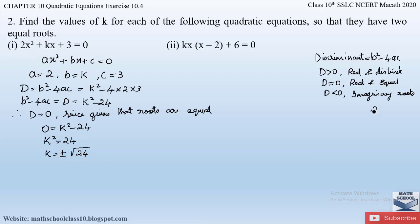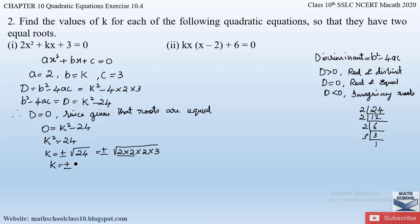Since 2 × 2 forms a pair, the 2 comes out of the square root, leaving 2 × 3 = 6 inside. So k = ±2√6. Therefore the value of k is +2√6 and −2√6 for the given quadratic equation. Now let us similarly solve the second part of question number 2.